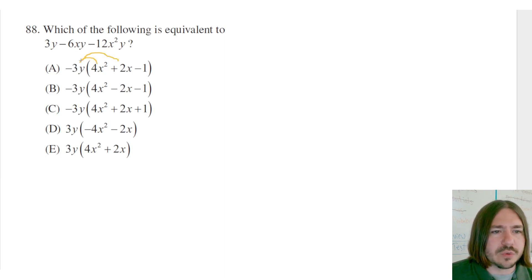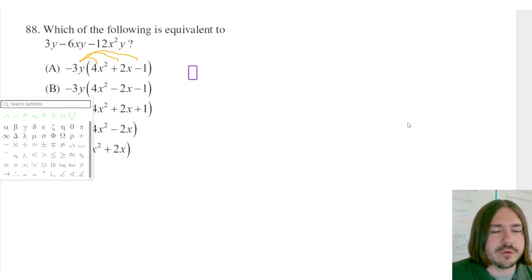We're gonna multiply this outside term by each thing on the inside. So if I multiply that negative 3y by 4x squared, I'm gonna get negative 12x squared y. So we're looking good so far. We do have the negative 12x squared y right here. And then we've got negative 3y times 2x, which is gonna be negative 6xy.